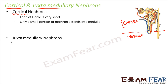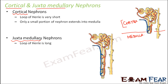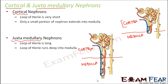The other type is the juxtamedullary nephron. The term medullary reflects that it extends into the medulla — here the loop of Henley is quite long, going deep inside the medulla. These are called juxtamedullary nephrons. These are the two types of nephrons you should remember, because when we talk about the process of urine formation and other mechanisms, we will be using these terms.